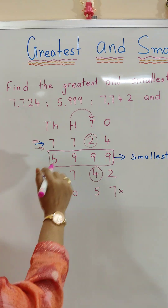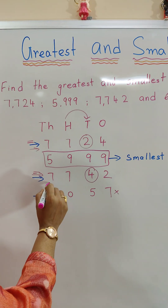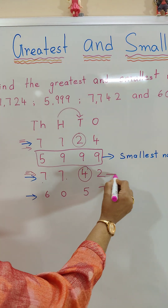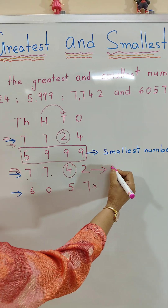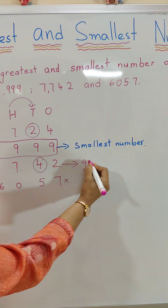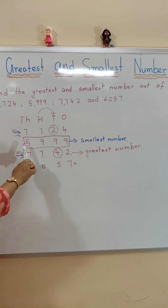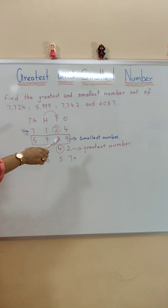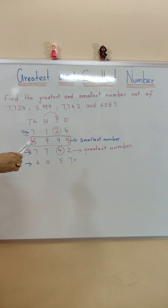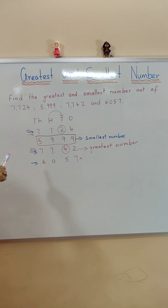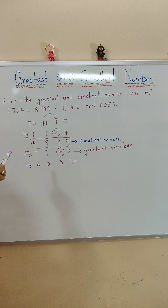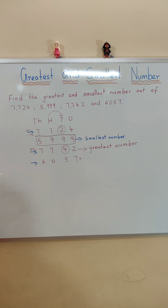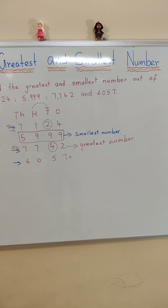Therefore, 7742 is the greatest number and 5999 is the smallest number. Thanks for watching the video. Please subscribe to our channel for more videos. Thank you.